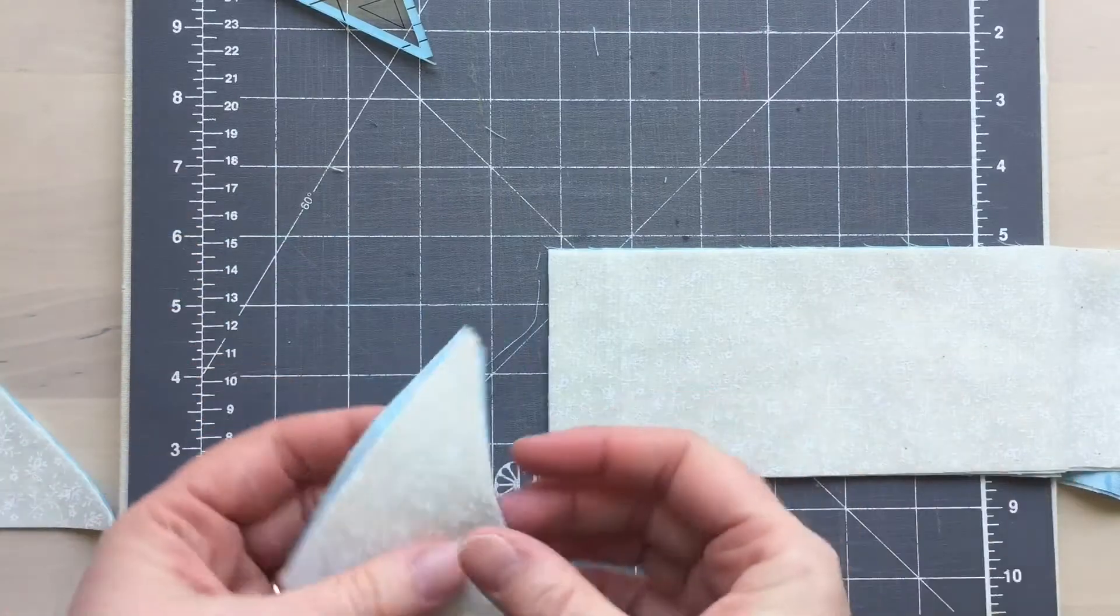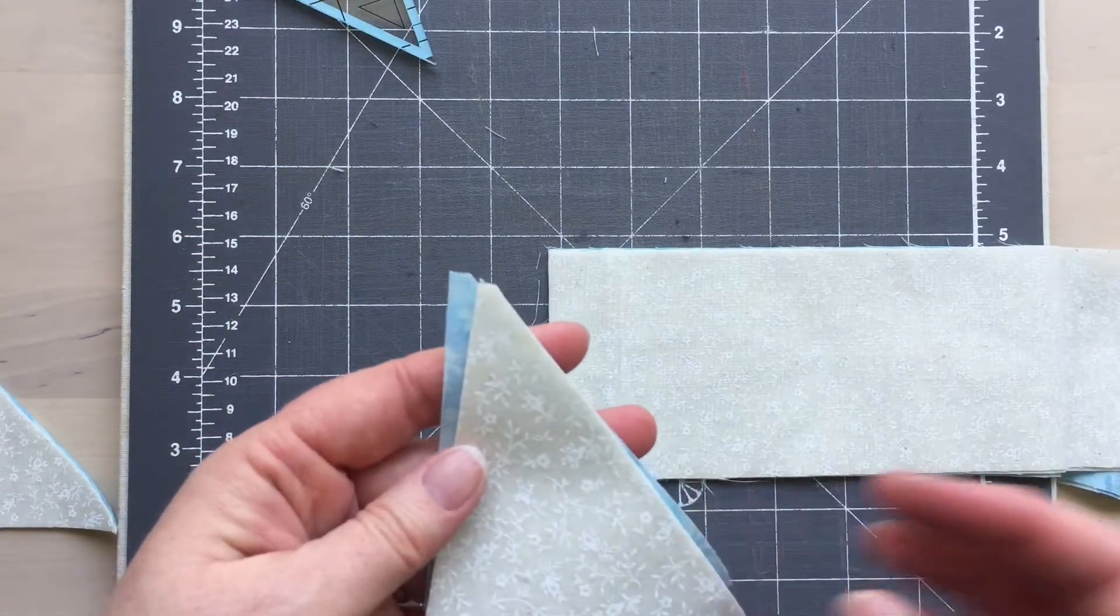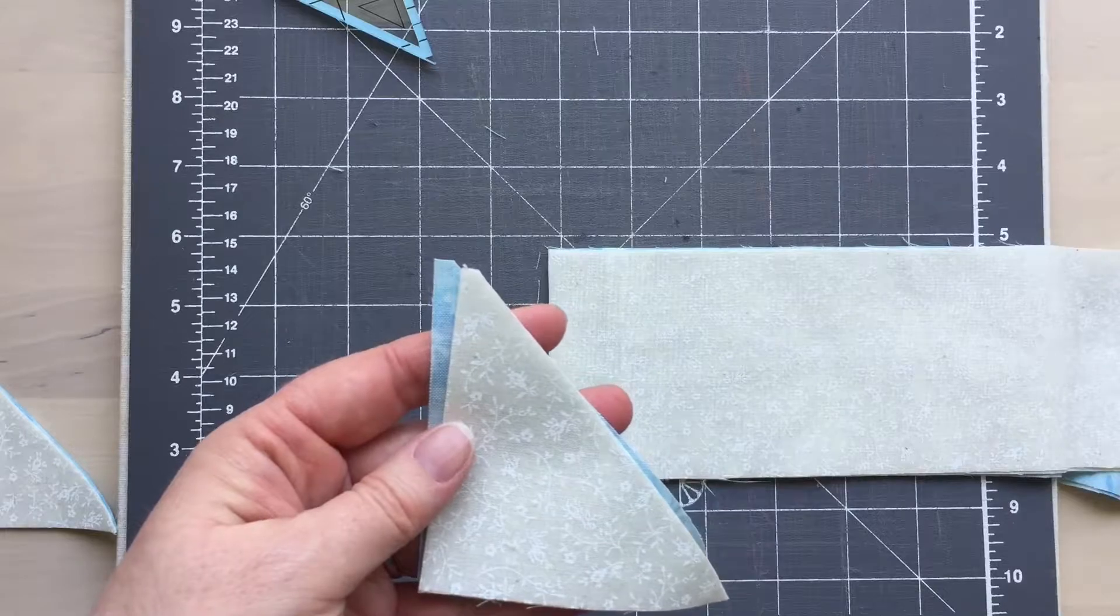Your two triangles will already be together and ready to stitch with the quarter inch seam along the diagonal line.